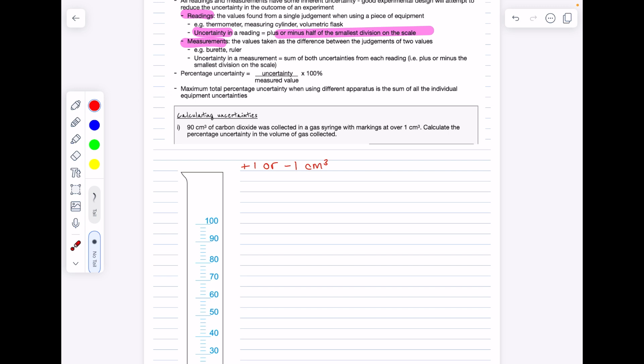Don't worry, if we actually start doing some calculations we'll be able to understand this far better than just looking at definitions. So, 90 centimeters cubed of carbon dioxide was collected in a gas syringe with markings every one centimeters cubed. Calculate the percentage uncertainty in the volume of gas collected. So here's our equation: percentage uncertainty equals uncertainty divided by measured value times by 100. What is plus or minus half the smallest division on the scale? Well that's plus or minus 0.5 centimeters cubed. What was our measured volume? It was 90, multiplied by 100, so our percentage uncertainty is 0.56 percent.